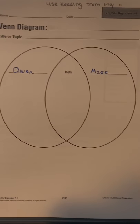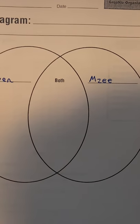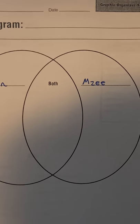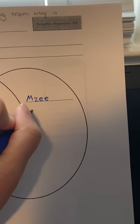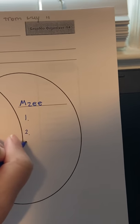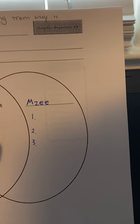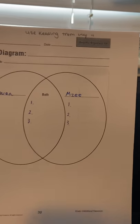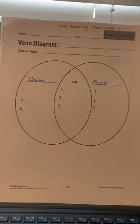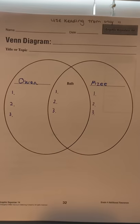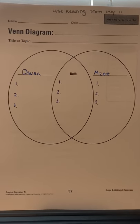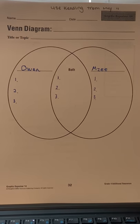You're going to tell how they are different — I want you to give at least two ways, if not three, of how they're different. And at least two ways, if not three, of how they're alike. Think of a title for your diagram. What would be a good title for this Venn diagram?